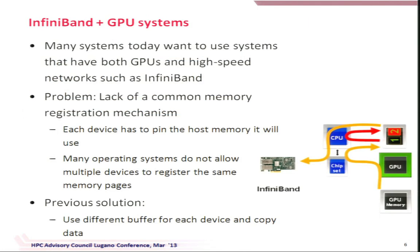Looking at a current system configuration: you have the CPU, main memory, the GPU, GPU memory, the chipset, and InfiniBand connected there. A few years back the challenge was memory registration — InfiniBand requires registering memory for data movement, and the GPU has the same requirement. The solution at that time was to copy from GPU memory to host memory, then copy again to InfiniBand's registered space, and then send the data. So even for small or large messages, there used to be three copies, which is obviously not very efficient.